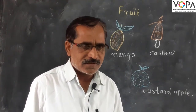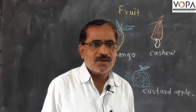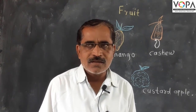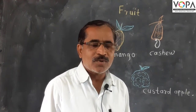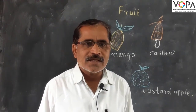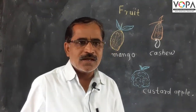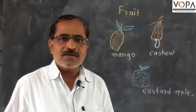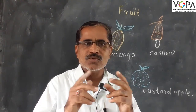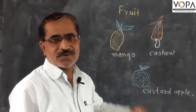Seeds also have two types. One is monocotyledonous and the other is dicotyledonous. In monocotyledonous seeds, the seed cannot be divided into two equal parts. In dicotyledonous seeds, the seed can be divided into two equal parts. In this way we learned about fruits.